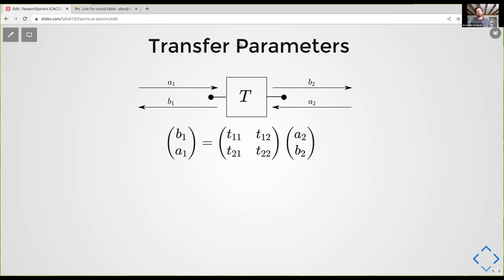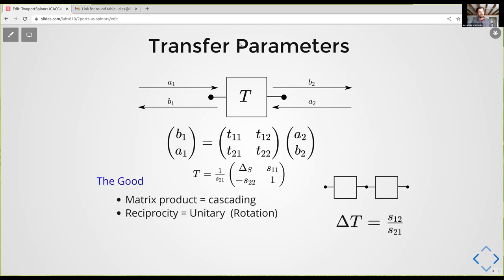So they developed transfer parameters just by moving some of the A's and B's around the independent variables. And then you can relate this new matrix to the old scattering matrix as such. And the good thing about this matrix is that the act of cascading networks is implemented now with the matrix products. So if you have a lot of networks in series, you can just multiply their transfer parameters together to get the net results. So that's really important.